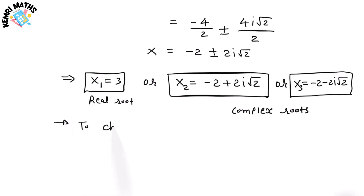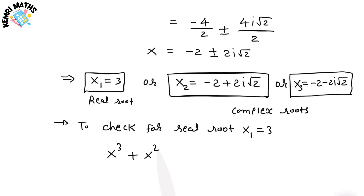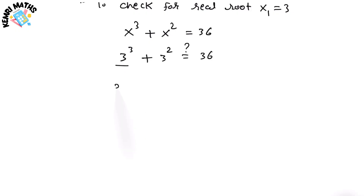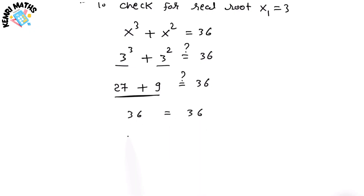Now I'm going to check the real root x = 3 by substituting it back into x³ + x² = 36. We get 3³ + 3² = 27 + 9 = 36. Therefore the left-hand side equals the right-hand side — verified!